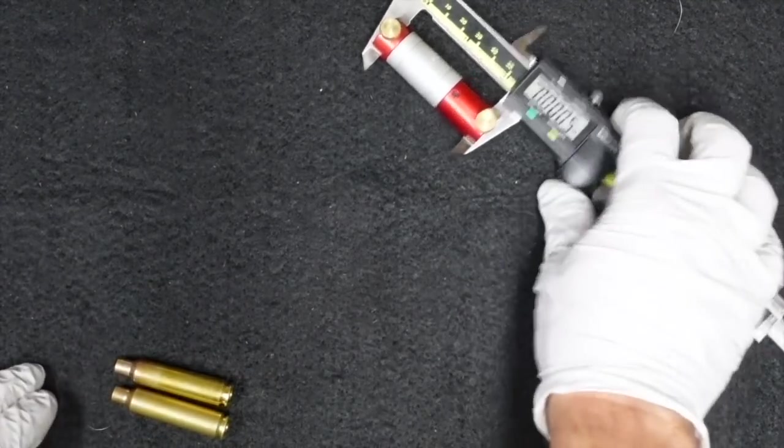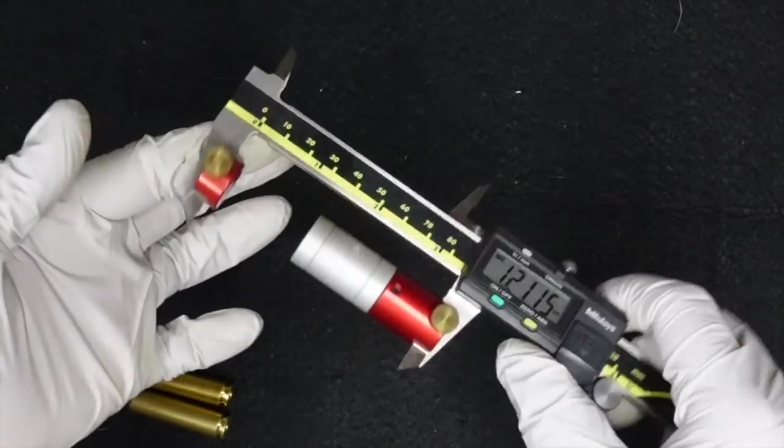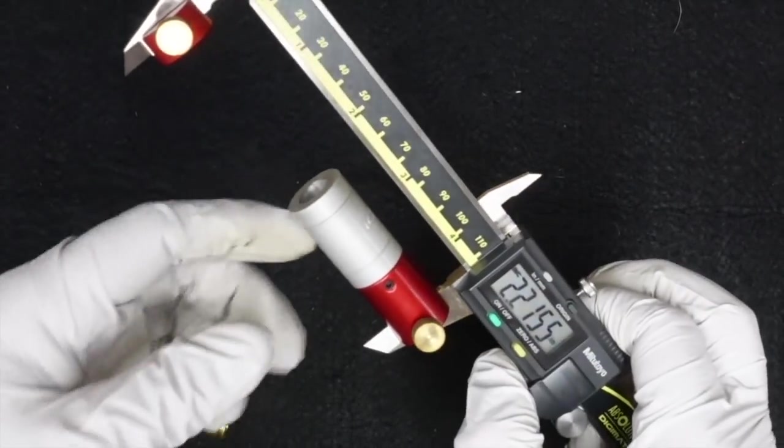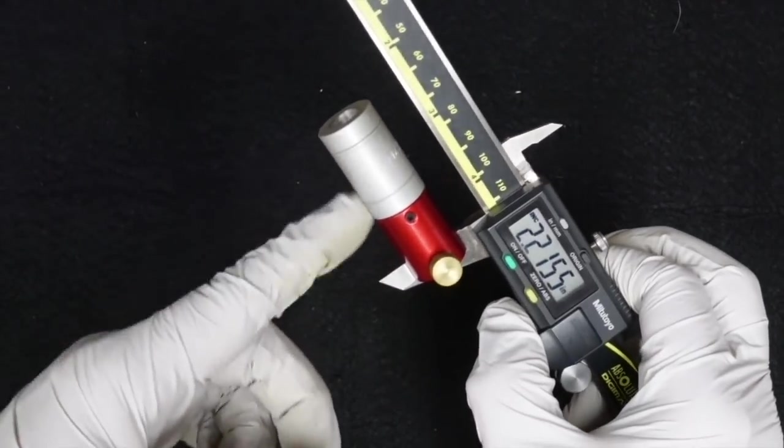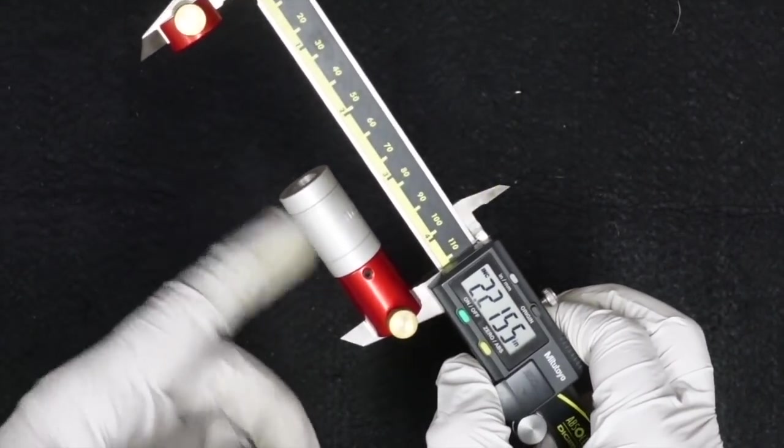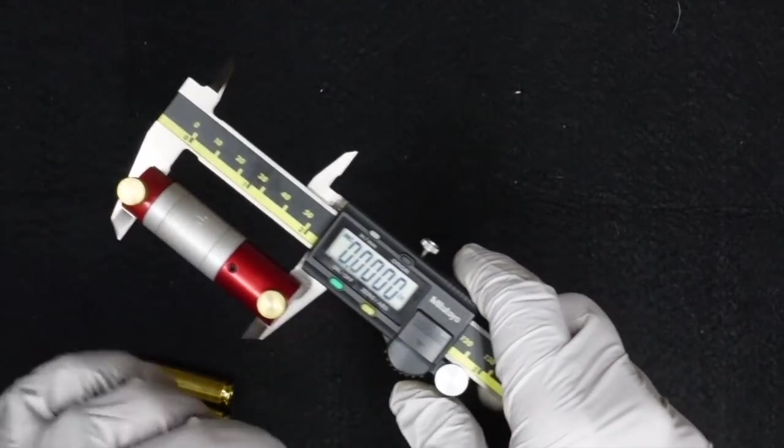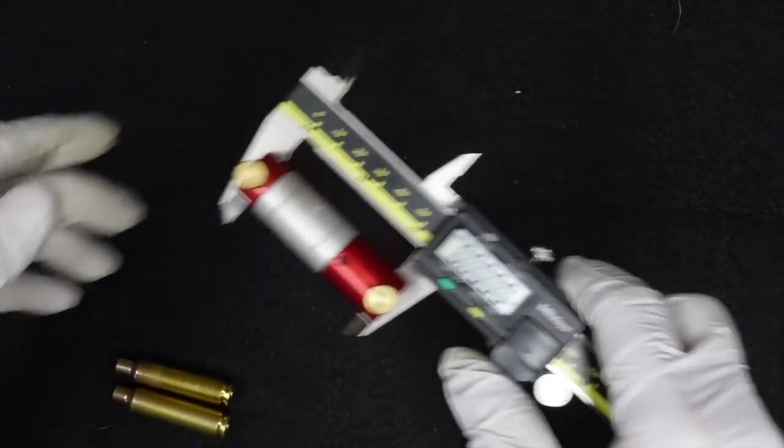And then the last way that a lot of people are familiar with is using the Hornady shoulder bump set. These are kind of caliber range specific. It comes with a whole set. There's like five or six different ones that you get that cover a range. What you're going to do is put it on your calipers and zero your calipers.